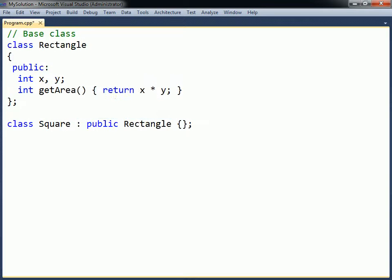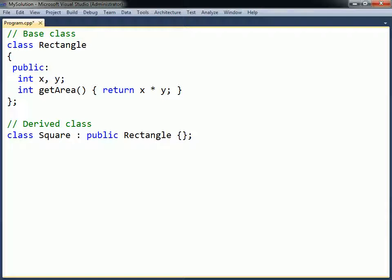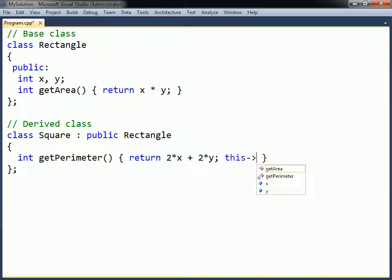Rectangle then becomes a base class of Square, which in turn becomes a derived class of Rectangle. In addition to its own members, Square gains all accessible members in Rectangle, except for its constructors and destructor.